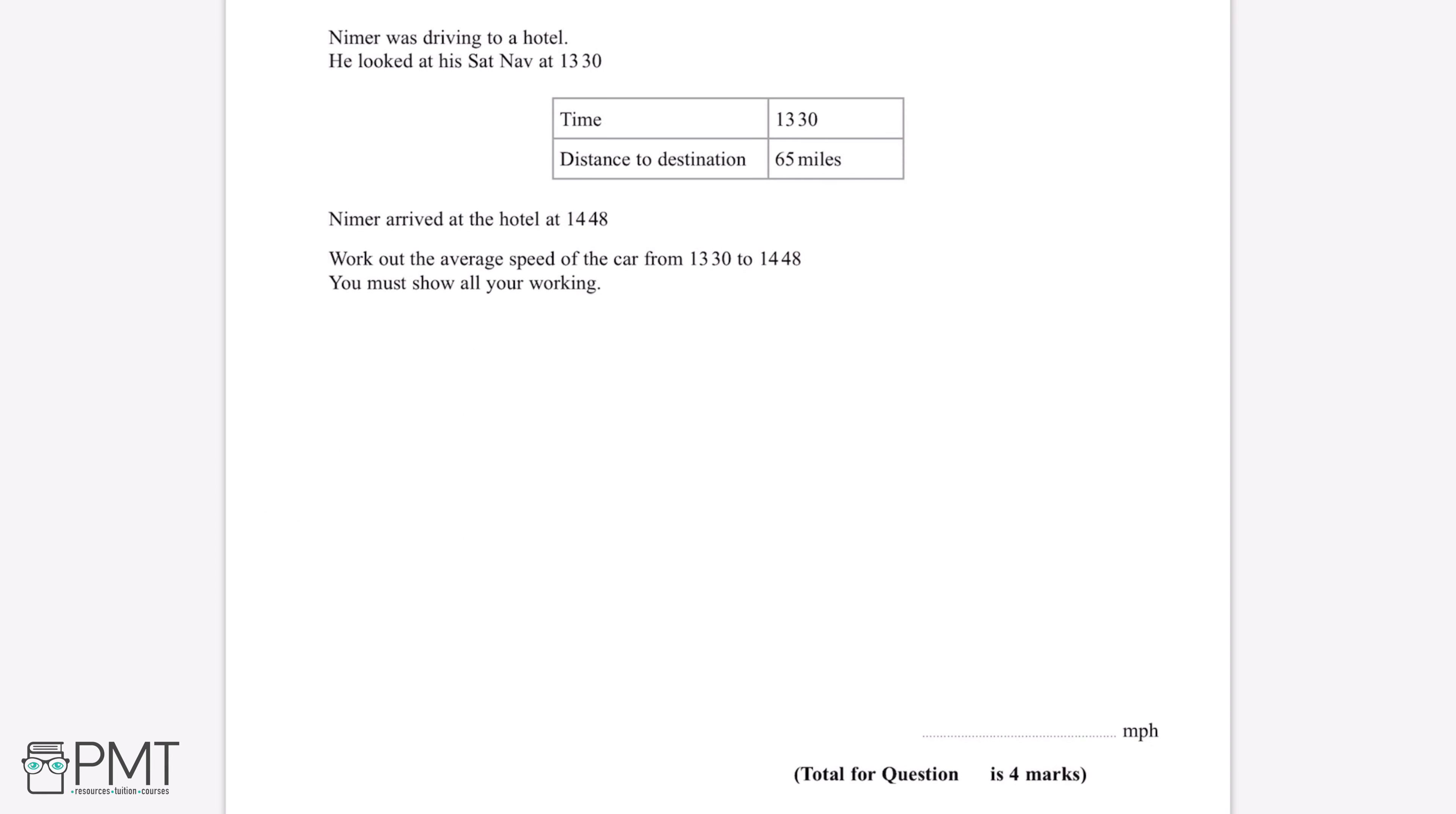Nima was driving to a hotel. He looked at his sat-nav at 1:30. Nima arrived at the hotel at 2:48. Work out the average speed of the car from 1:30 to 2:48. You must show all your workings.